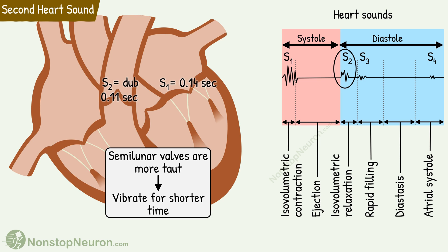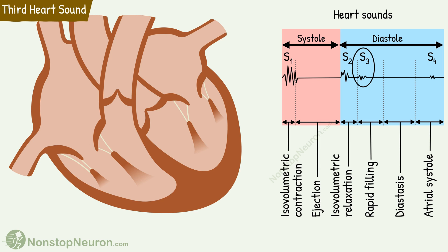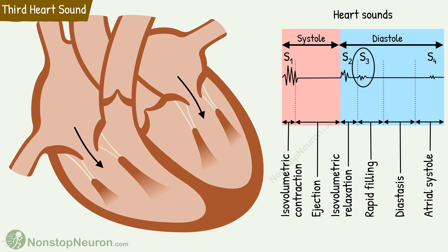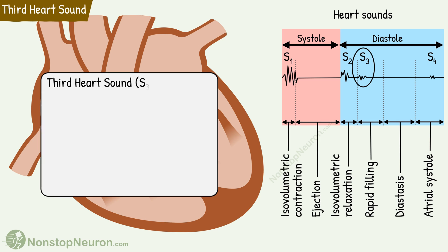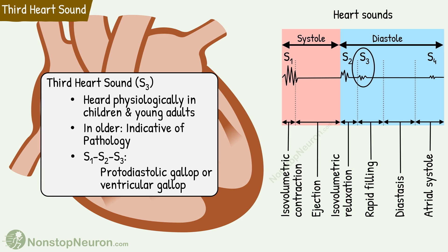So this was the second heart sound, and that completes both the major heart sounds. Now the sounds that are heard occasionally are the third and fourth heart sounds. The third heart sound is heard early in the diastole. It is produced by sudden inrushing of blood from atria into the ventricles. It can be heard physiologically in children and young adults; in older people, it is usually indicative of some pathology. When this third heart sound gets added to the physiological first and second heart sounds, the three-sound sequence S1, S2, S3 sounds like a galloping horse, and it's called protodiastolic gallop or ventricular gallop.